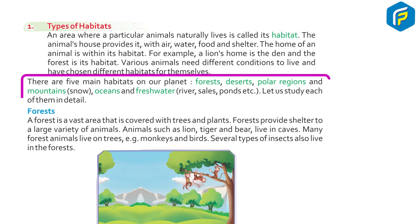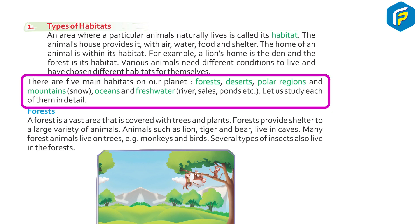There are five main habitats on our planet: forests, deserts, polar regions and mountains with snow, oceans, and fresh water bodies like rivers, ponds, etc. Let us study each of them in detail.